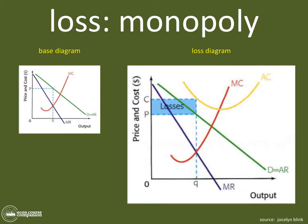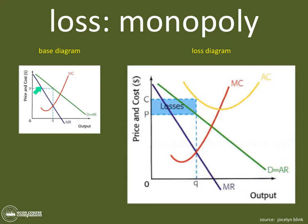What if the IB asks you to show a loss in monopoly? You stay calm — it doesn't matter if it's loss, abnormal profit, or normal profit, because the base diagram is the same. Draw your axes, label them with price/cost and output. Draw your demand curve equaling average revenue, then your marginal revenue curve descending at twice the rate and extending beyond zero. Draw your marginal cost curve. The profit maximizing level of quantity is always where marginal cost equals marginal revenue. Extend that up to price. Now you know: if you draw the average cost curve intersecting below that point, you have abnormal profits; above it, you have a loss.